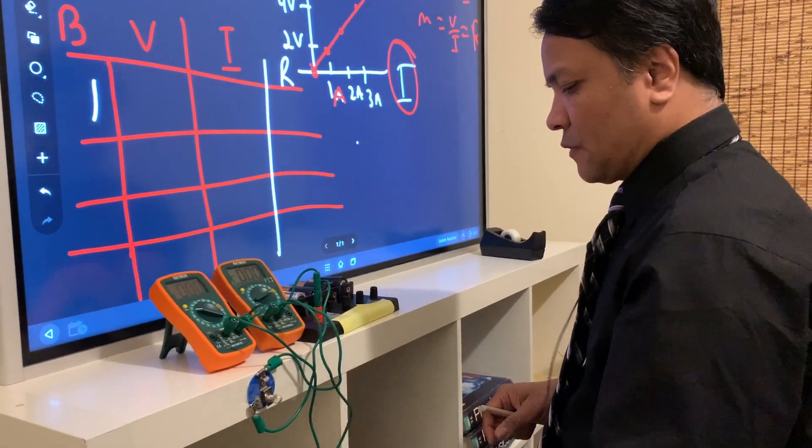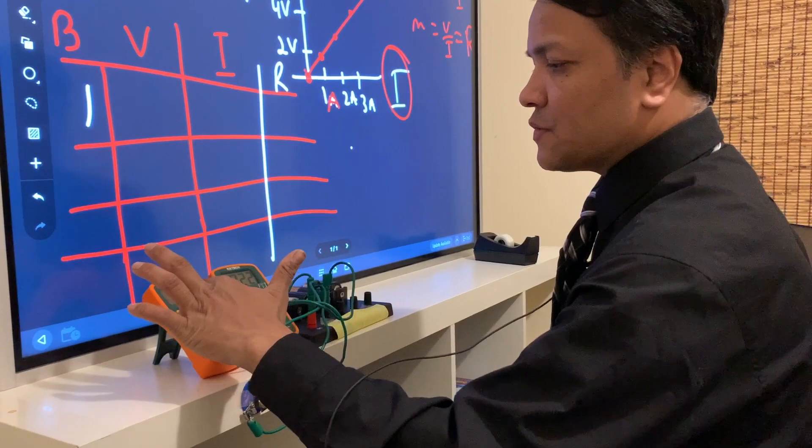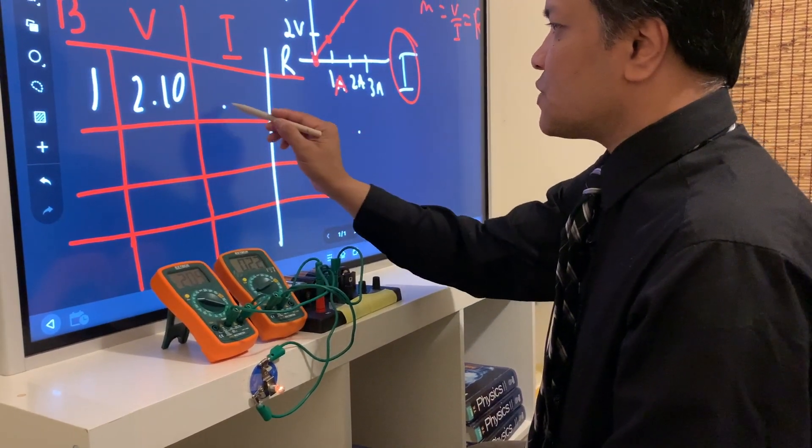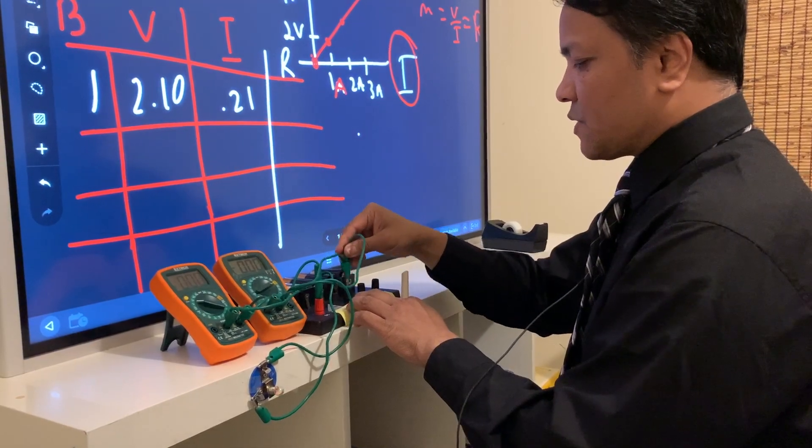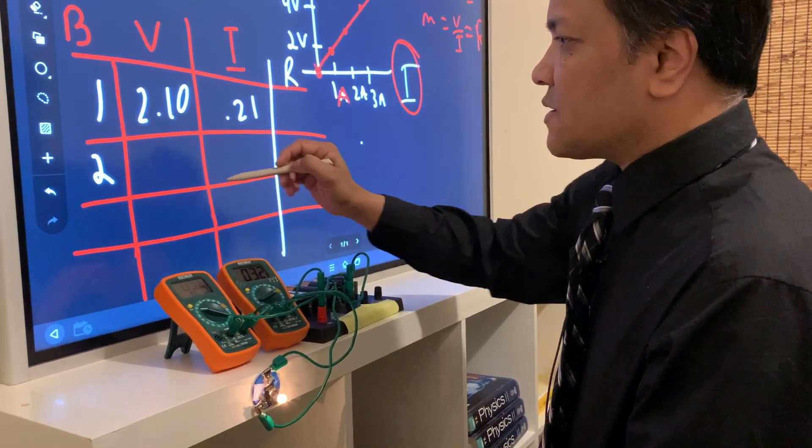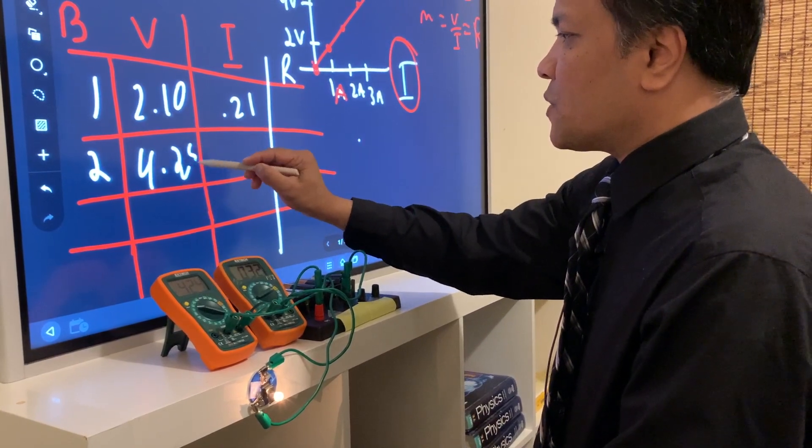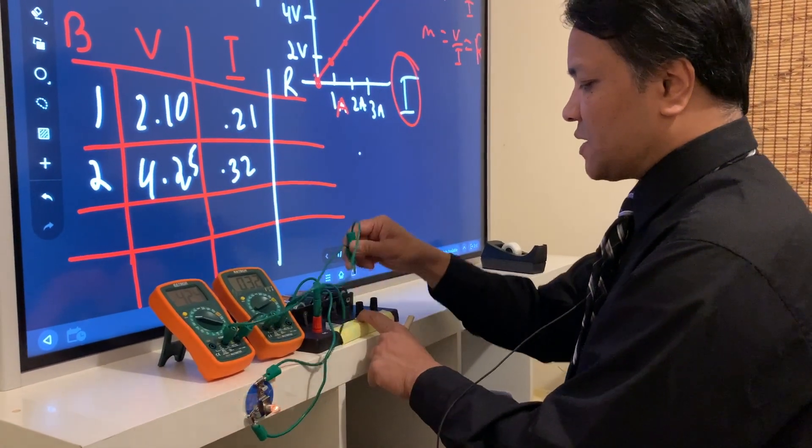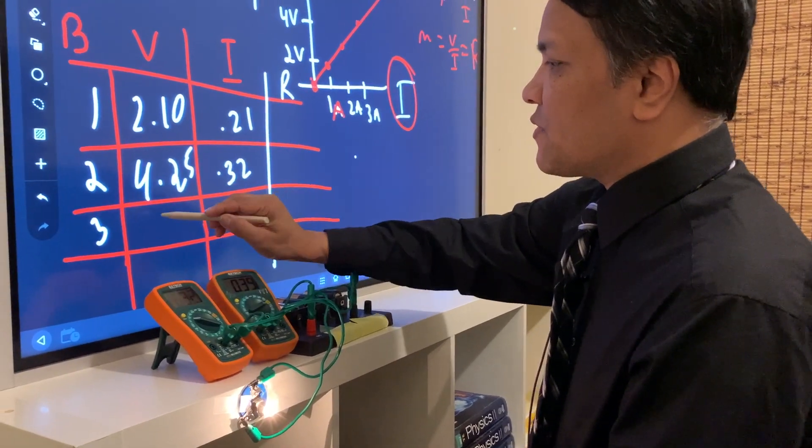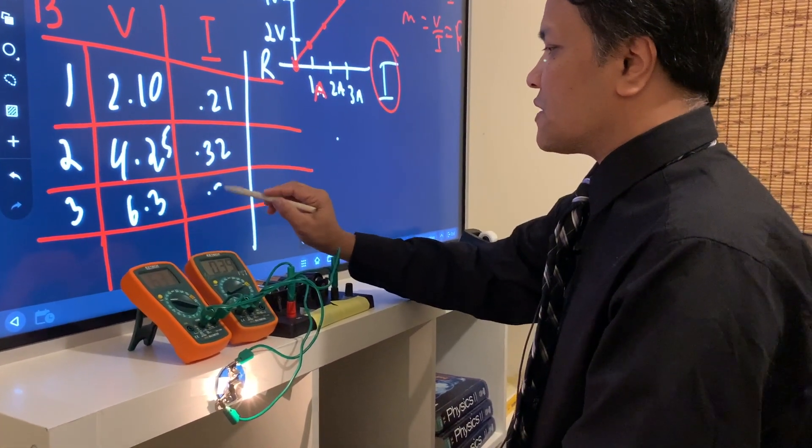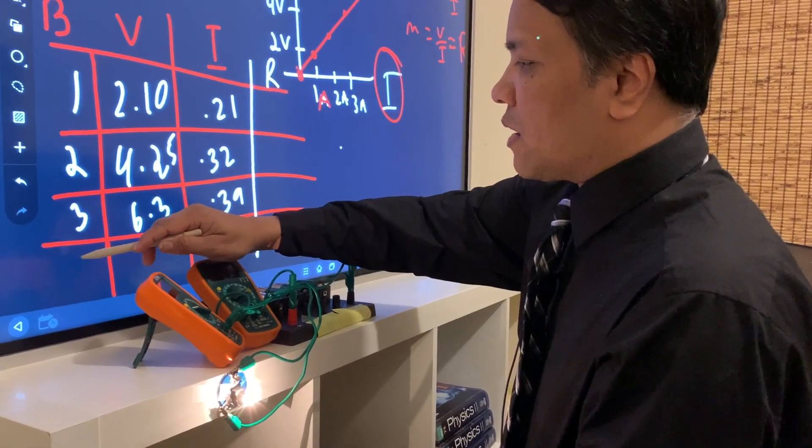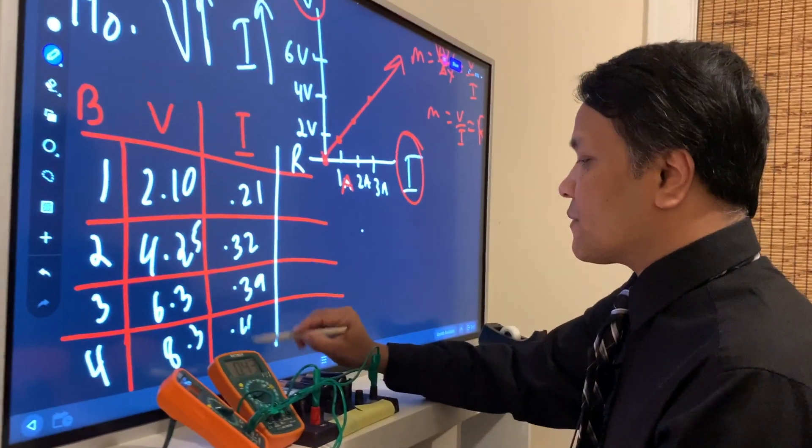One battery gives us how much voltage? About 2.10. So 2.10, and the current is 0.21. Now 2 batteries. Now we're going to put 2 batteries. 2 batteries: 4.25. And the current is 0.32. Now you're going to put 3 batteries. 3 batteries, and we see 6.3. And the current is 0.39. And finally, 4 batteries. Keep checking the brightness of the bulb. 4 batteries, we have 8.3 and 0.43.